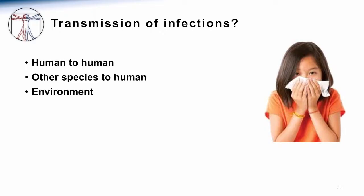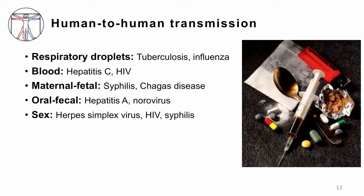How do you get infections? There are three main ways to think about people getting infections: you can either get it from another human — human-to-human transmission — you could have transmission from another species that's not a human, and then you can get it from the environment. For human-to-human transmission, some examples would be getting it from respiratory droplets. For example, if I had tuberculosis or influenza, my disease might be transmissible to you if we were in close contact with each other.